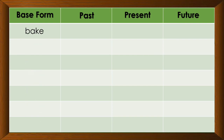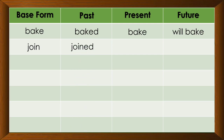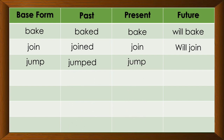Let us have the first word: bake. If it's in the past form, it will become baked. Present: bake. Future: will bake. Join — past: joined, present: join, future: will join. Jump — past: jumped, present: jump, future: will jump.